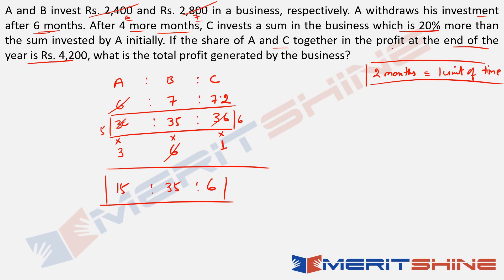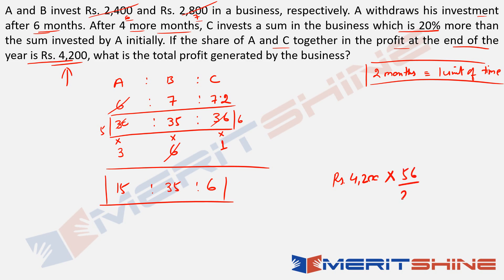The question says: if the share of A and C together in the profit at the end of the year is Rs. 4200, what is the total profit? A gets 15 units and C gets 6 units. Out of a total of 15+35+6 = 56 units of profit, A and C together get 15+6 = 21 units. These 21 units equal Rs. 4200. So total profit = 4200 × (56/21) = 4200 × (8/3) = Rs. 11,200.